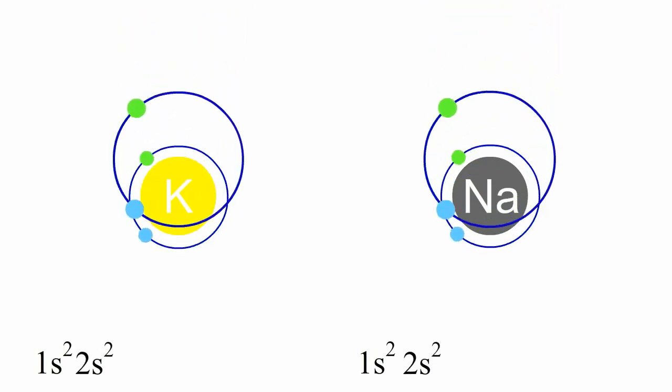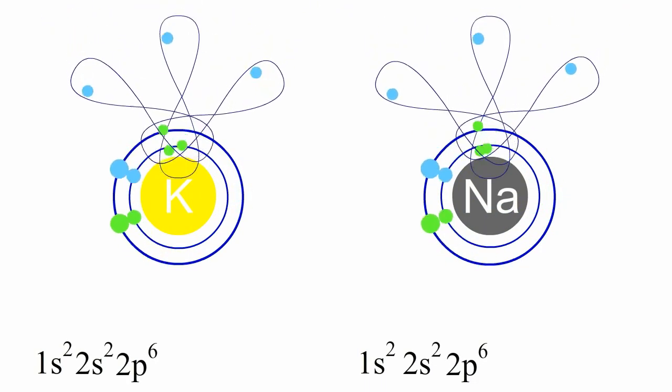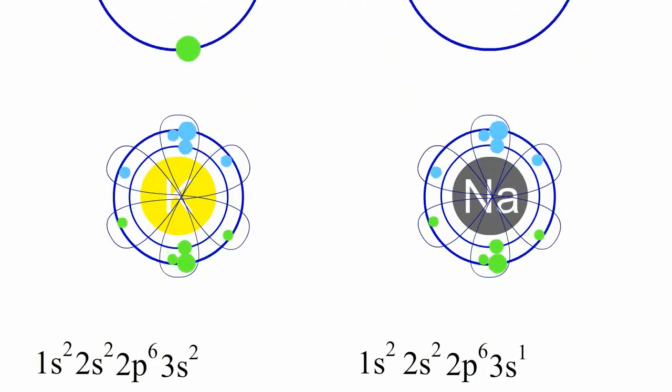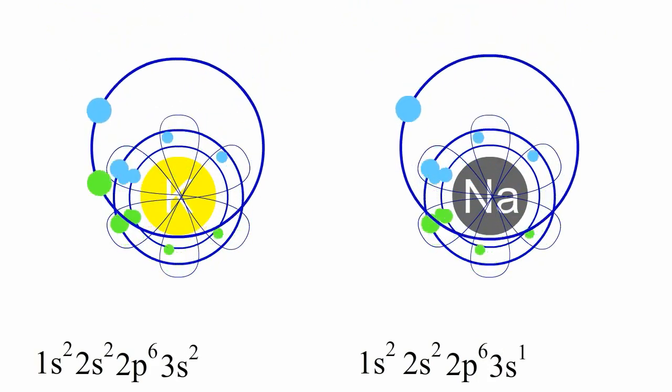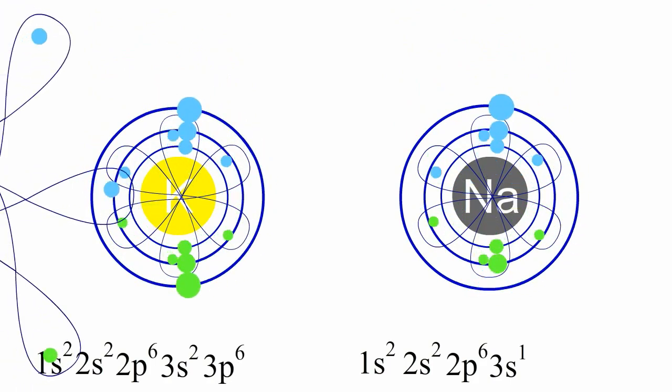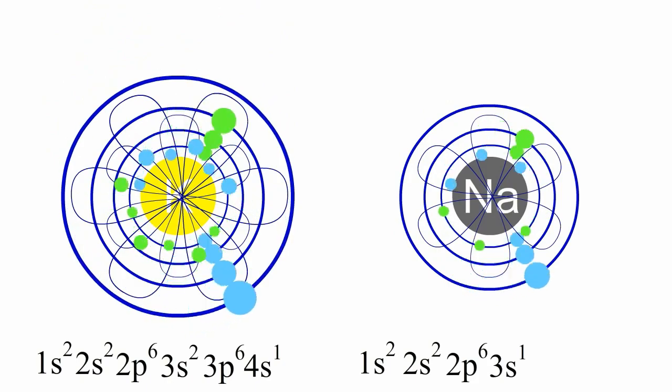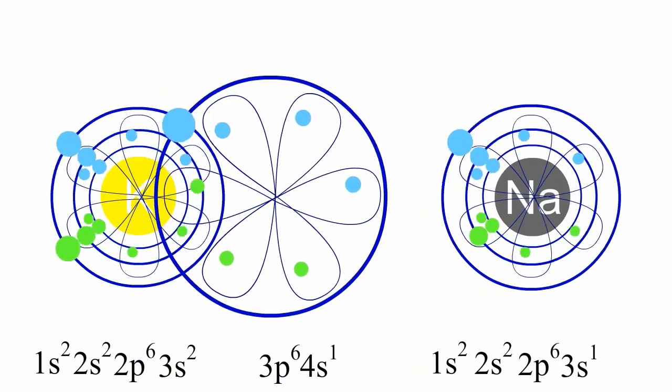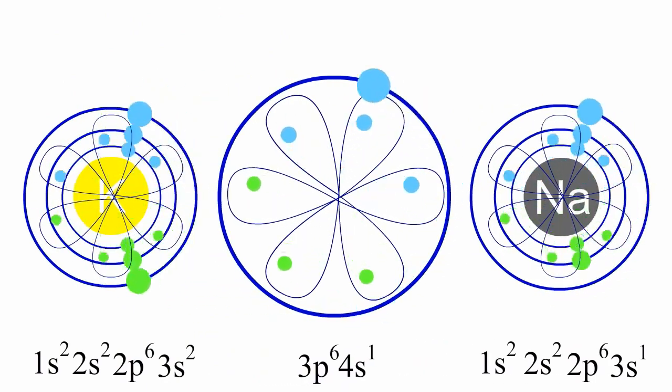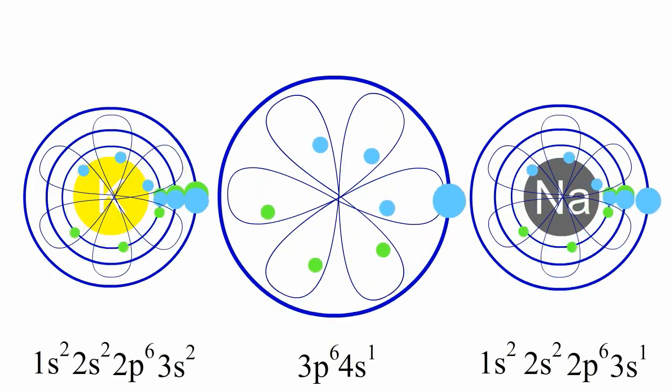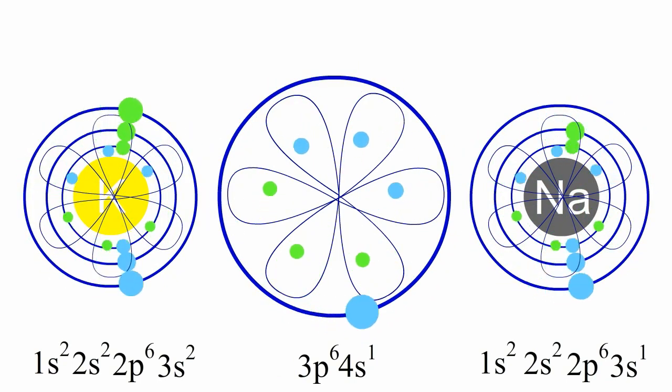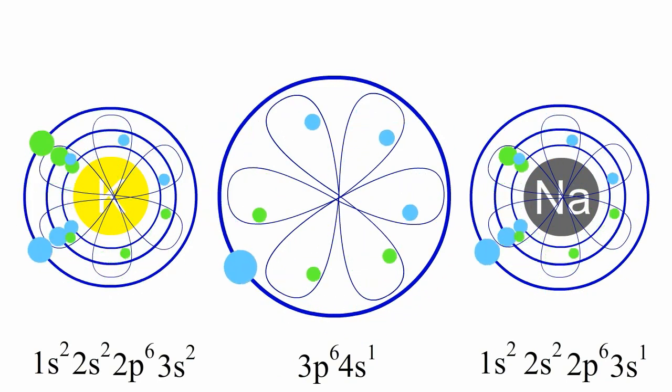Following the Aufbau principle, write down the quantum numbers for sodium and potassium. Now, we can easily discover that potassium gains two more subshells than sodium. The difference in the electron distribution results in their difference in radius.